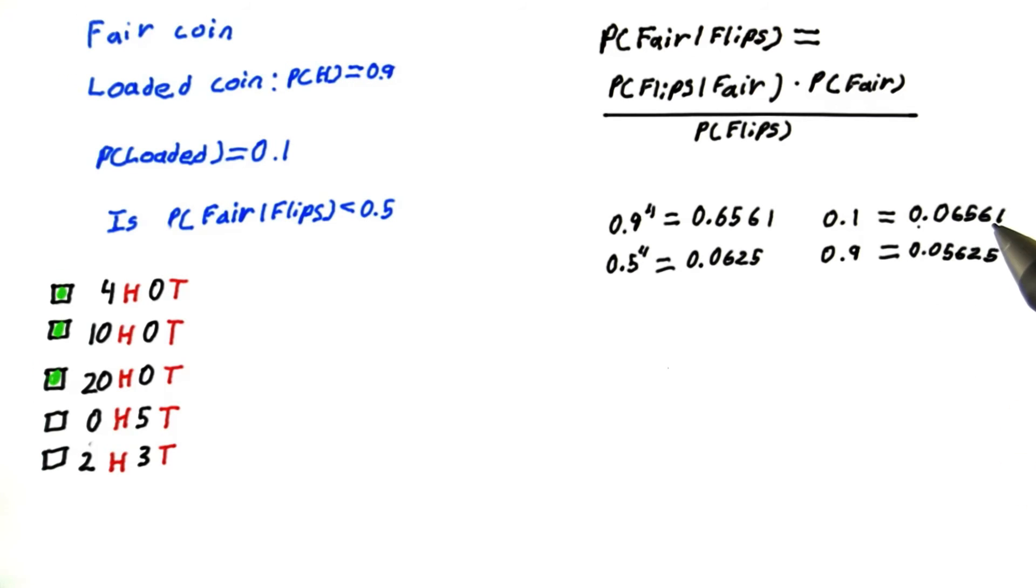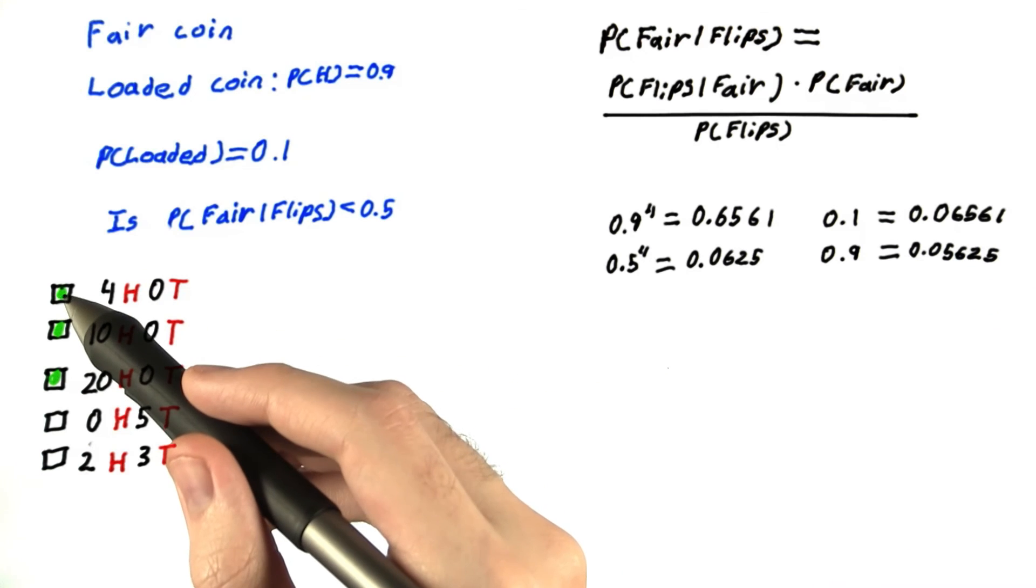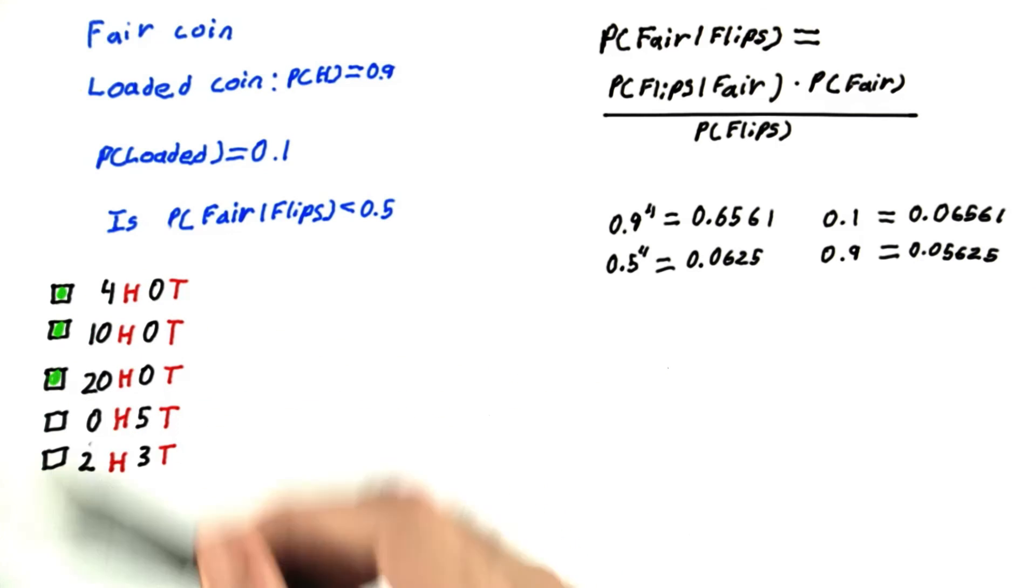Together, they're equal to P of flips. So only one of these divided by that can be greater than 50%. It's going to be the bigger one, so it's going to be P of loaded. And if P of loaded given flips is greater than 0.5, then P of fair must be less. So this is true, which means this is true, and this is true.